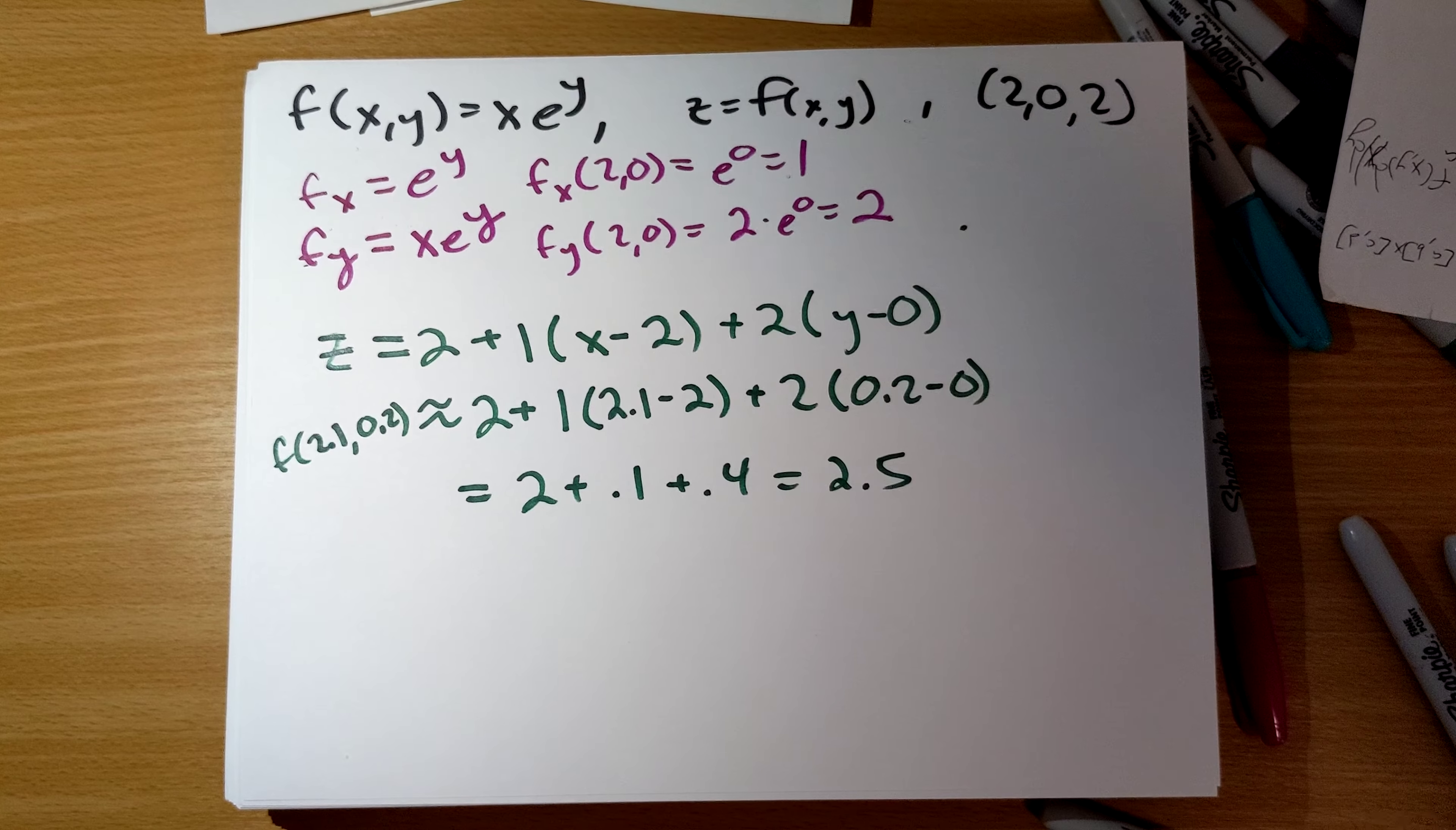f sub x of 2, 0 is going to be e to the 0 is 1. f sub y of 2, 0 is going to be 2 times e to the 0 is 2.